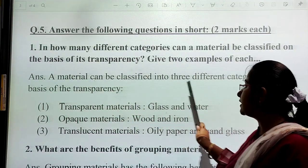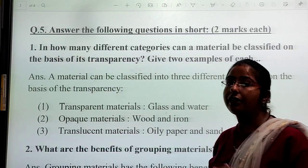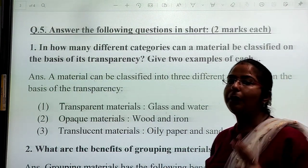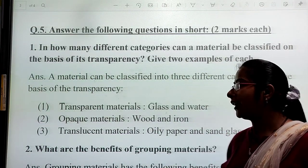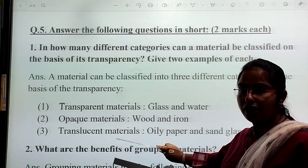Answer: A material can be classified into three different categories on the basis of its transparency. They are divided into three categories: transparent material, opaque material, and translucent materials.